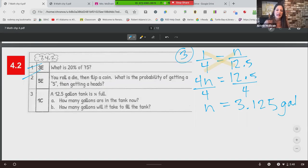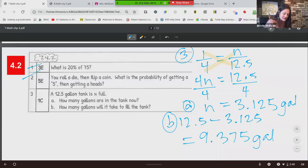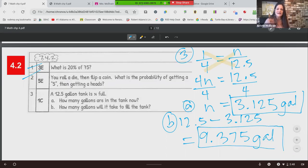So now we want to know how many gallons does it take to fill it? So that's A. So for B, we're going to take 12.5 and we're going to subtract 3.125. 9.375 gallons are needed to fill the tank. There's our first answer. And there it is. Tank problem.